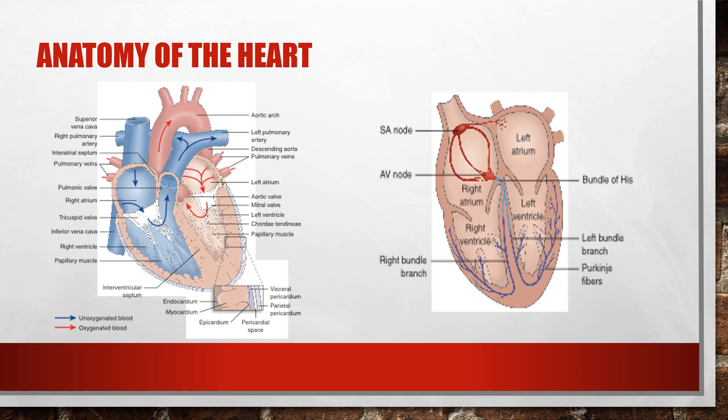The heart is the pump of our body. It squeezes and relaxes over and over to pump our blood all over our body. The heart is made up of three layers: the endocardium, myocardium, and epicardium. The endocardium is the innermost layer and it lines the chambers and valves of the heart. The myocardium is the muscle layer and does all the pumping work. The epicardium is the outermost layer.